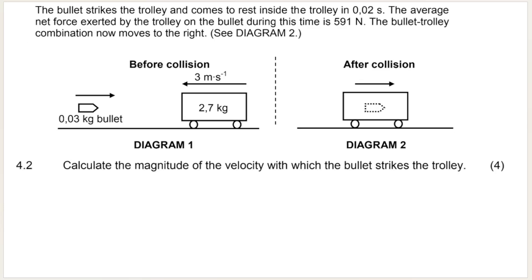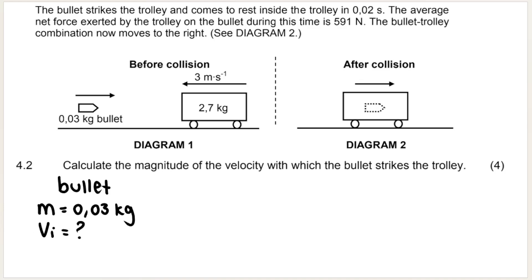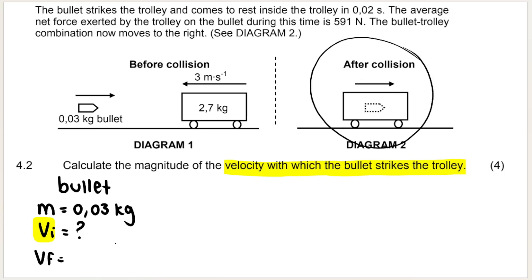Question 4.2: calculate the magnitude of the velocity with which the bullet strikes the trolley. I always recommend listing the variables you have versus the variables you do not have. For the bullet: we know the mass is 0.03 kilograms. We don't know the initial velocity of the bullet — that is what the question wants, the velocity with which the bullet strikes the trolley. I also don't know the final velocity of the bullet. The final velocity of the bullet will be the same as the final velocity of the trolley because they are together now.